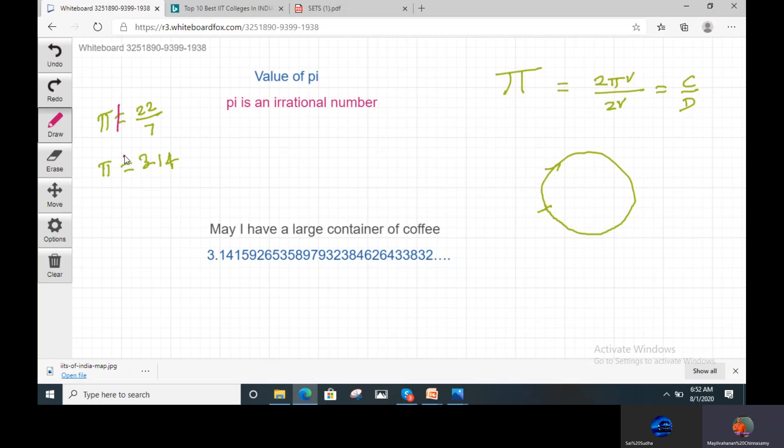So how can you write Pi as 22 by 7 or 3.14? 3.14 is a terminating decimal, 22 by 7 is a rational number, but Pi is irrational number. Rational can be written in the form of P by Q. Irrational number we can't write in the form of P by Q.